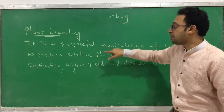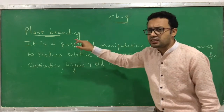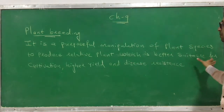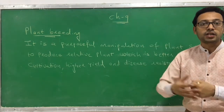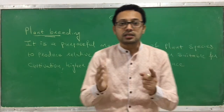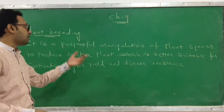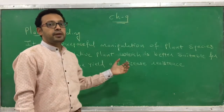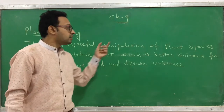What is plant breeding? It is a purposeful manipulation — we are changing our plant species — to produce a similar plant species which is a better cultivar, from which better production can be achieved. It has a higher yield, meaning the quantity of food or biomass can be increased, and it should be disease resistant.